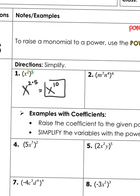Our next example: we have m to the seventh power and n to the fourth power, and that whole thing is to the fourth power. We multiply this fourth power into both of them. We do m to the seven times four power times n to the four times four power. Seven times four makes m to the twenty-eighth power, and four times four makes n to the sixteenth power.